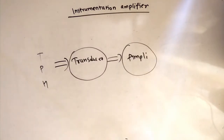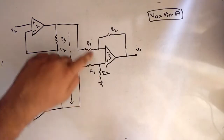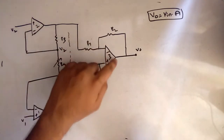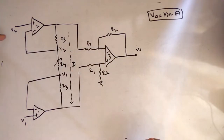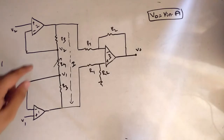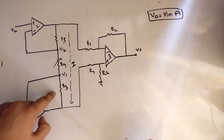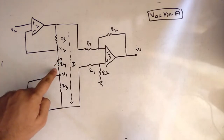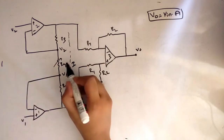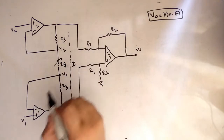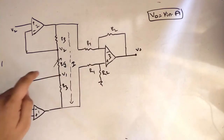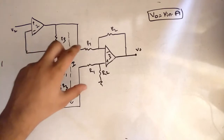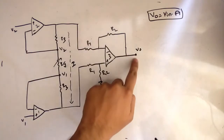Let's see the derivation. This is the circuit we have. You can note that we have 3 op-amps: 1, 2 and 3. The input voltages are V2 and V1. We have resistances R3, R3, and a variable resistance RG, as well as resistances R1 and R2. This is the output voltage.